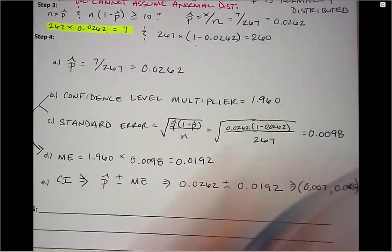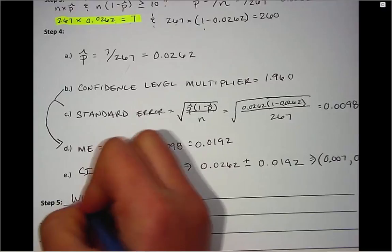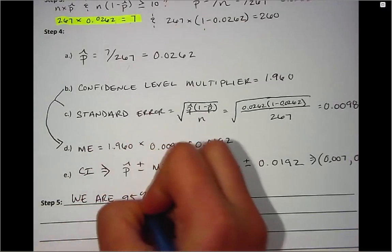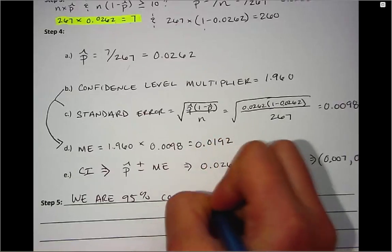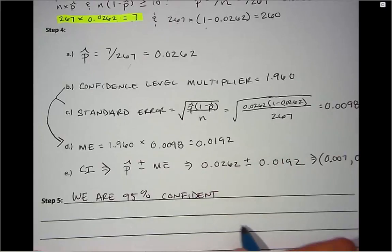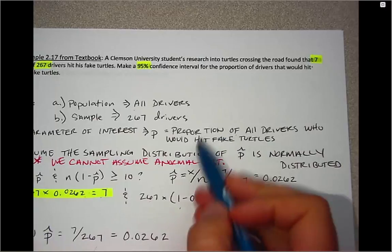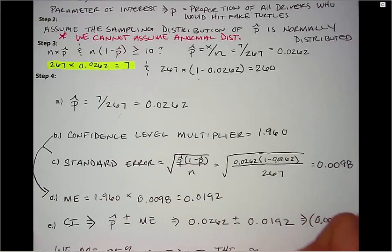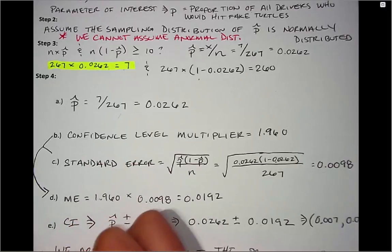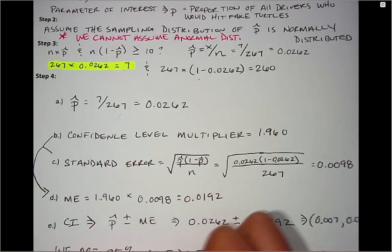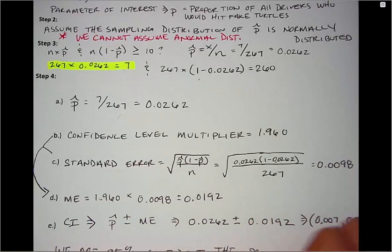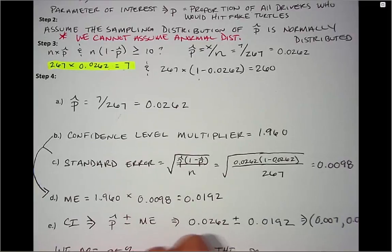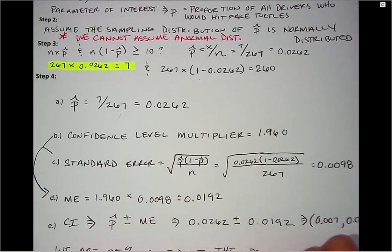Now to interpret the confidence interval, we start with how confident we are. We are 95% confident — this comes from the multiplier we used. Then we state the parameter defined earlier: the proportion of all drivers who would hit fake turtles. So the full interpretation is: we are 95% confident the proportion of all drivers who would hit fake turtles is between 0.007 and 0.0454.